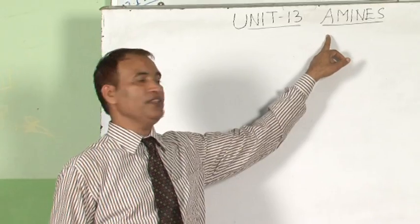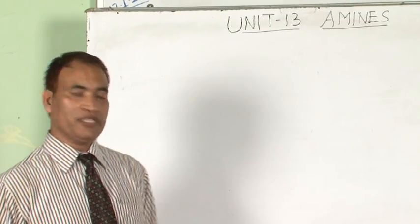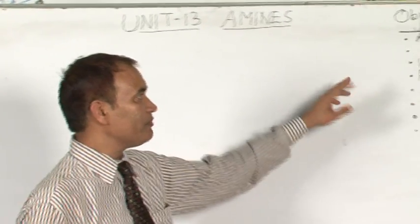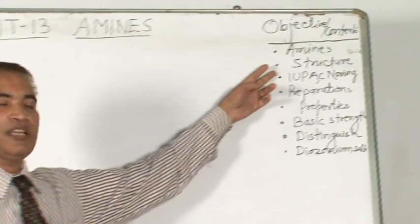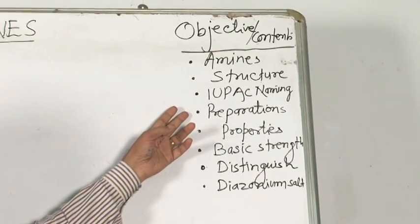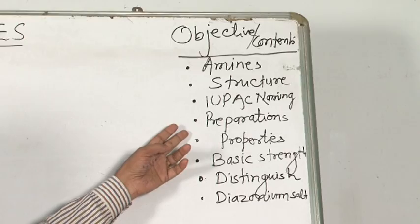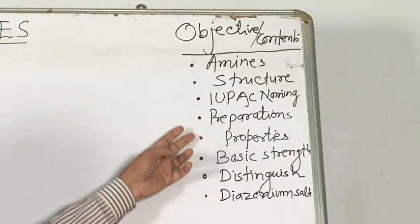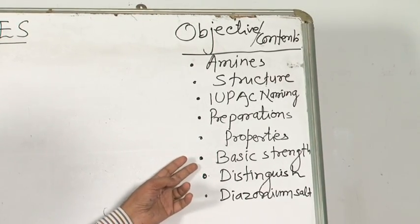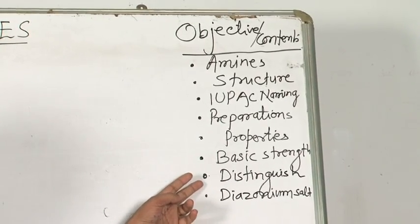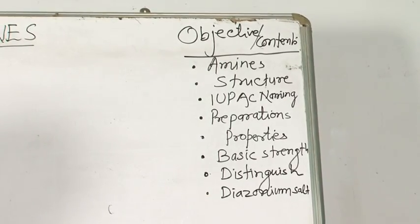The topic is Amines. The main objectives of this topic are: what are amines, what is the structure of amines, IUPAC naming, general method for preparation of amines, chemical properties, basic strength, some distinguished type questions, and diazonium salts.